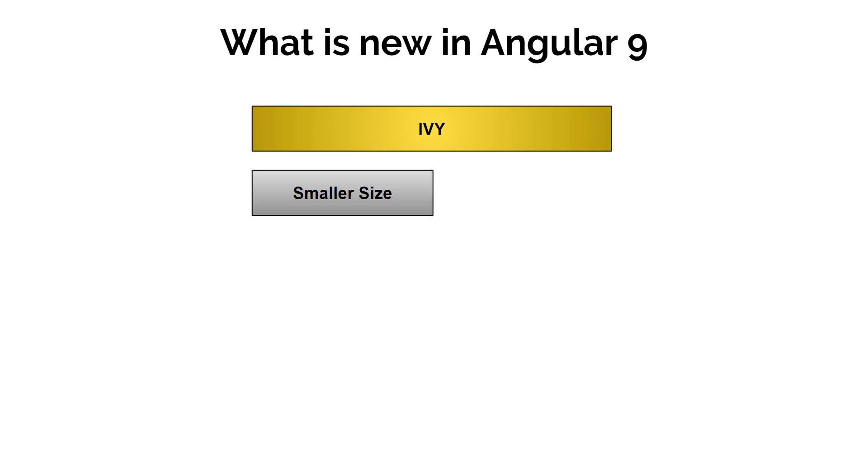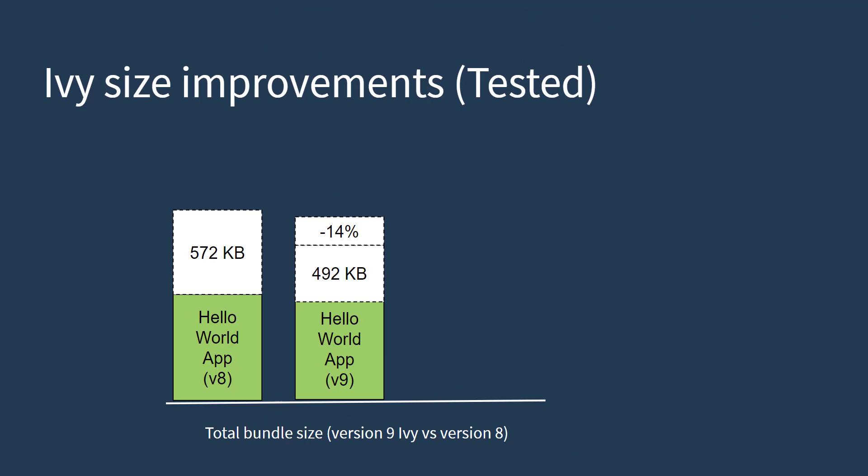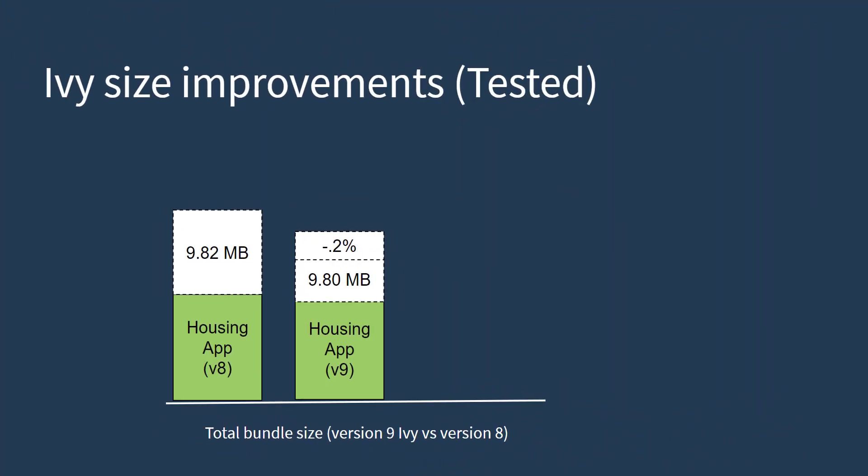The Angular team has claimed that for smaller apps we can see a 30% size reduction. Medium-sized apps should see slightly smaller benefit — only 2% — because they don't have enough components to truly leverage smaller factories. Large apps with many components can benefit most from the reduced factory size. Importantly, this size reduction is for the compiled application, not the source we developed. To test this I created two hello world apps and saw a 14% size reduction in production build. I also migrated our property dealing application from version 8 to 9, and it showed only a 0.2% decrease in size, likely because it falls in the mid-size segment.